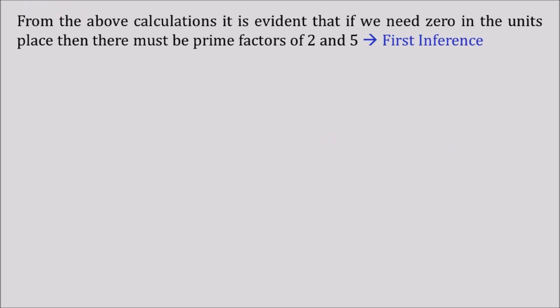From the calculations, it is quite evident that if there is a 0 at the end of any number, then definitely there must be prime factors of 2 and 5. Without the prime factors of 2 and 5, we cannot get a number with 0 in the units place like 10, 100, 1000, and so on. Let's name this as our first inference.